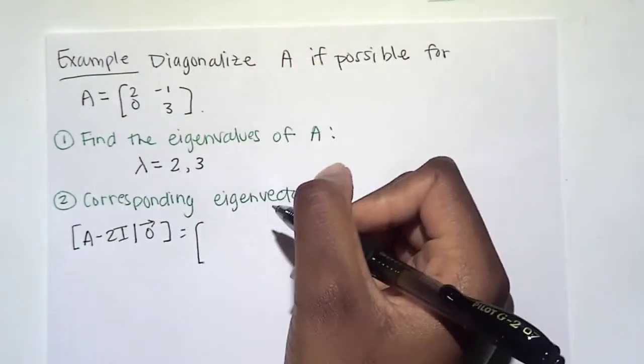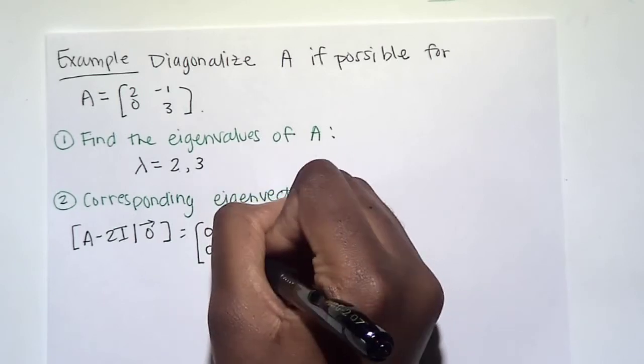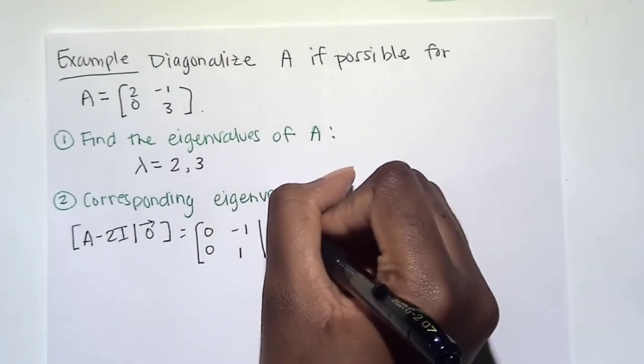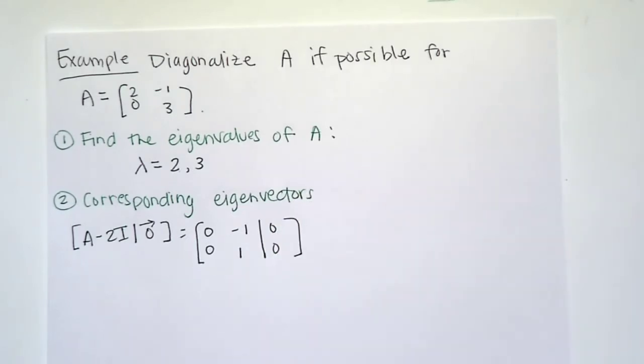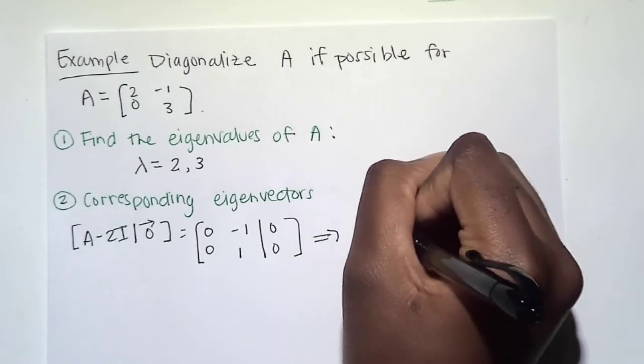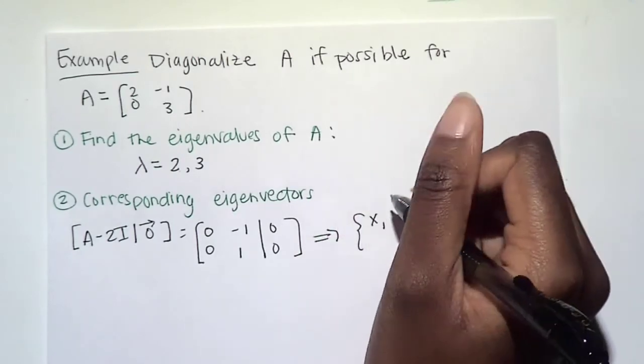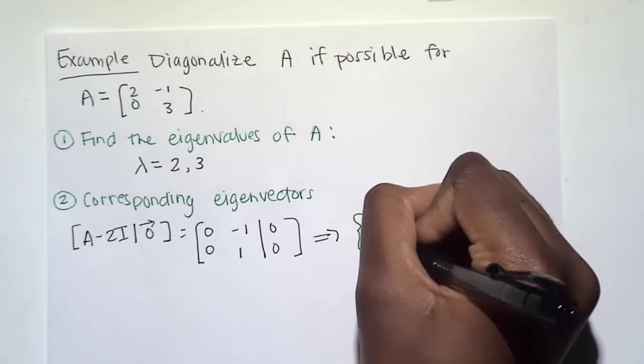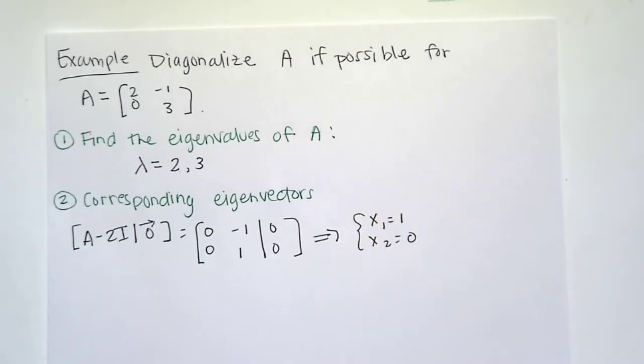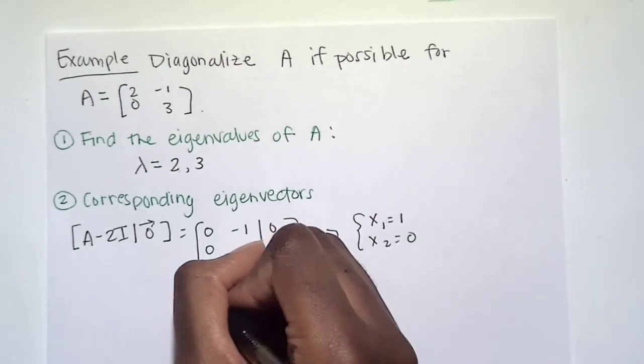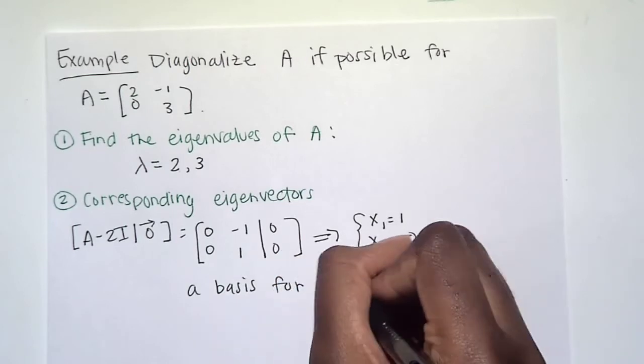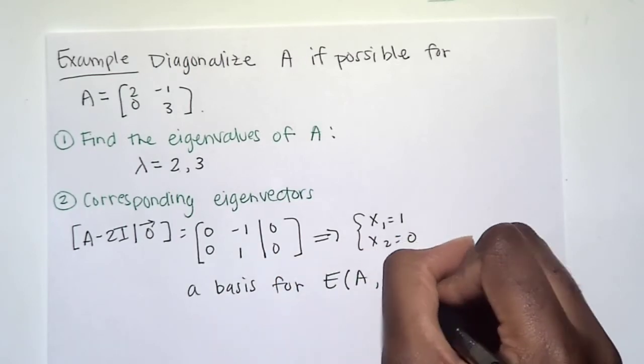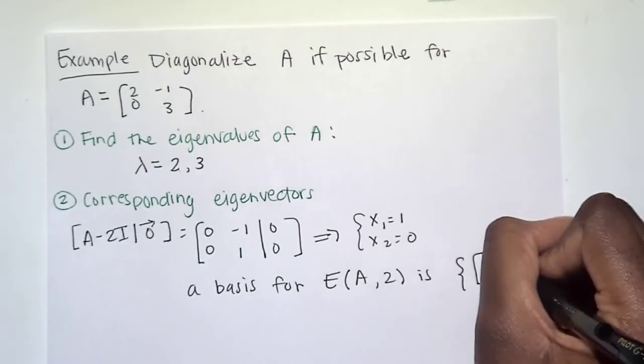So when we do that math, we should get down the columns, a 0, a 0, and negative 1, 1, 0, 0. We can easily solve and get a general solution where x1 is 1, or whatever we want it to be, and x2 is 0. So we see that a basis for our eigenspace E(A, 2) is going to be {[1, 0]}.